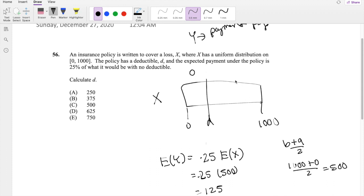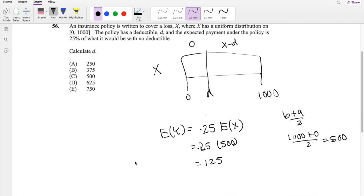And if I pay anything here, as a customer, I would pay X minus D. That's my expected number of payment. So now we can set up our integral here. So this will be going from D to 1000. I would be paying X minus D.